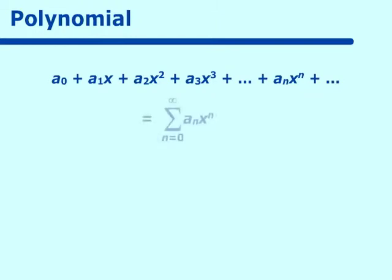What is a polynomial? A polynomial is something that reads a sub zero plus a sub one x plus a sub two x squared plus a sub three x cubed plus on and on plus a sub n x to the n. And if we want to go on infinitely, that is equal to the summation from n equals zero to infinity of a sub n x to the nth power.